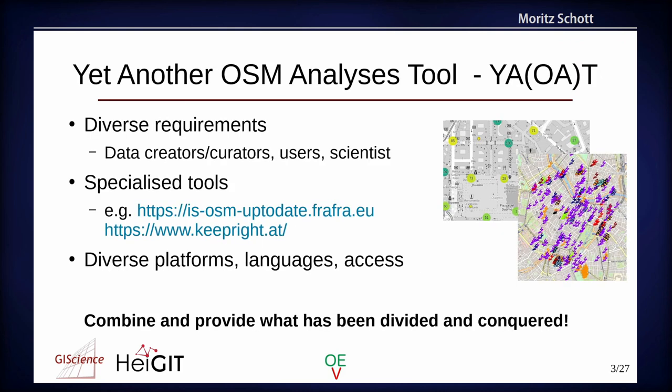Yet another tool about OpenStreetMap analysis, right? We have so much already. But of course we have many because we have diverse requirements. We have data creators, curators, users, scientists, and each and everyone needs their own type of analysis. We also have very specialized tools currently — for example, tools that answer specific questions precisely, or KeepRight which is a linter that has specific questions it asks of the data and answers to the user. And of course we have diverse platforms, because when data is open, everybody can create their tools. Our goal was to combine and provide to the user what has been divided and conquered.